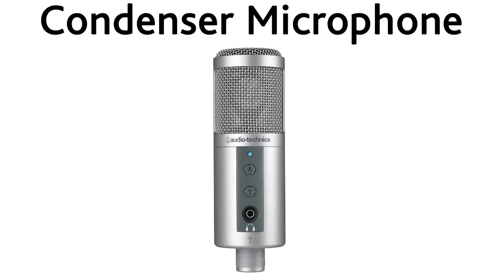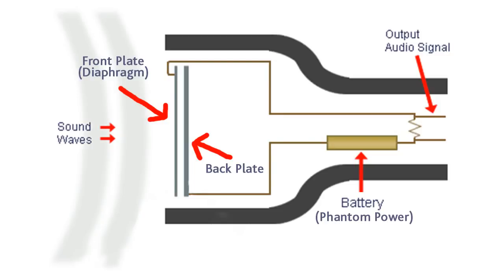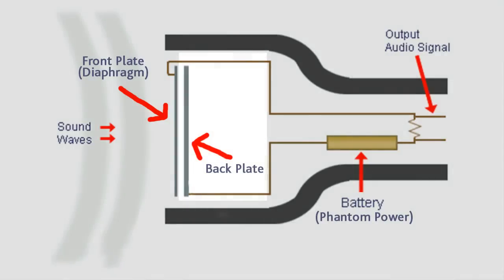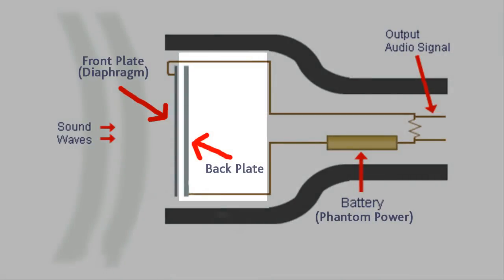Let's talk about the condenser microphone now. The condenser microphone uses two metal plates to create an electrical current. One of these plates is a diaphragm, which will vibrate to the sound waves hitting it, and the other plate is stationary, meaning it doesn't move at all.